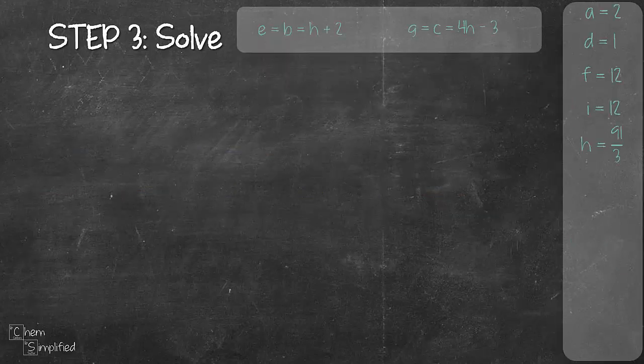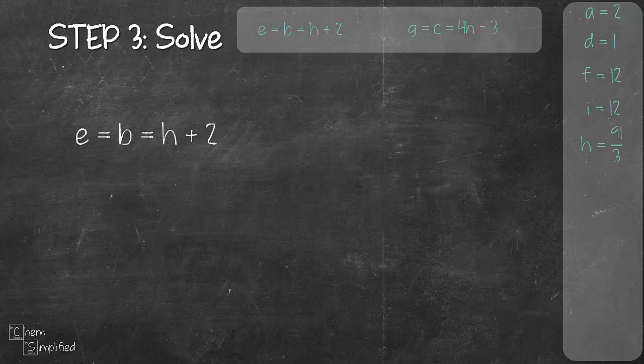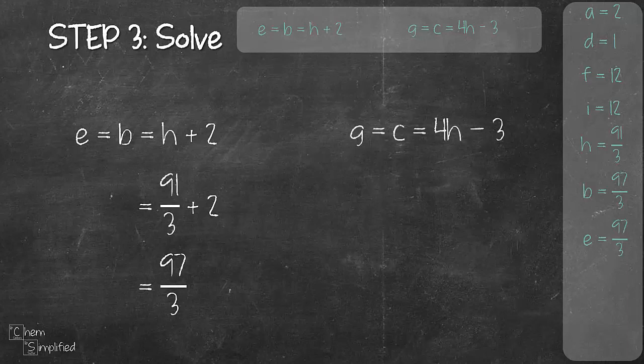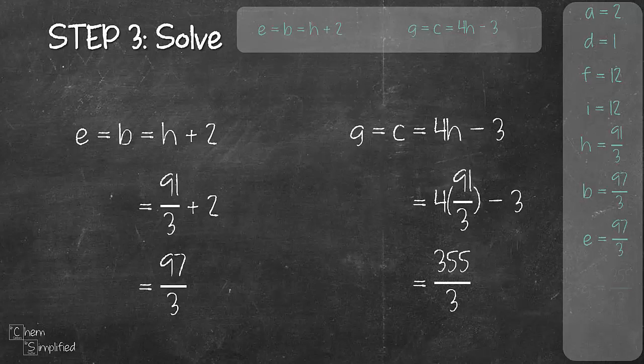Now let's use h to solve for the rest of the coefficients. So plugging that in gives us e and b equals 97 over 3. And we'll do the same for g and c subbing in the value for h that will give us 355 over 3 for g and c.